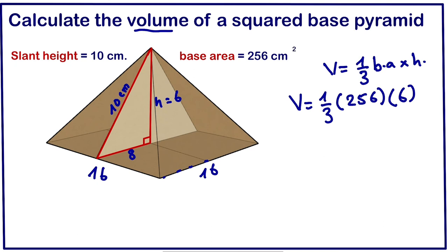So we can simplify: 6 divided by 3 is 2. So we'll be left with the volume of our pyramid. The volume will be equal to 1 times 256, 256 times 2. So volume will give us 512 centimeter cube. Thanks for watching, please subscribe.